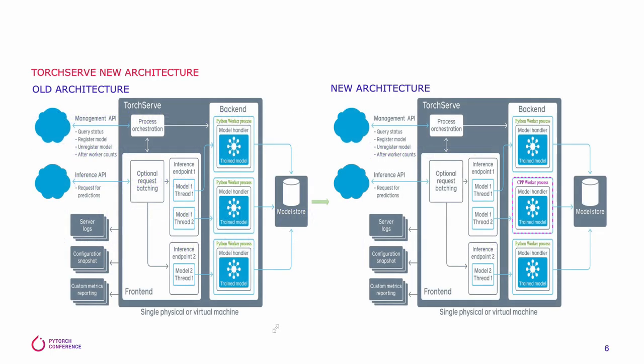Let's see what's the change in TorchServe architecture introduced by the CPP Backend. The left side picture is TorchServe's original architecture — a Java front-end and Python back-end worker process. On the right side picture, we can see the back-end extended to support a C++ worker process. The Java front-end is not only able to connect with a Python worker process, but also able to connect with a CPP worker process.